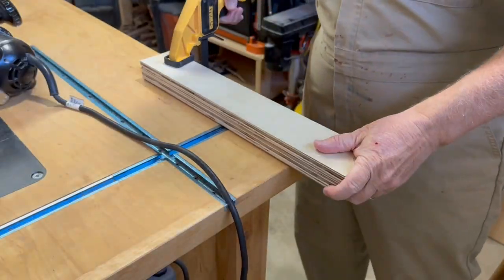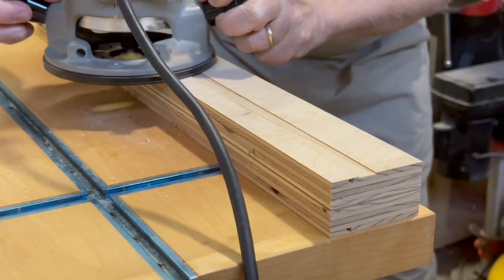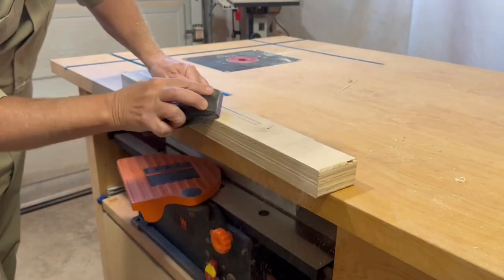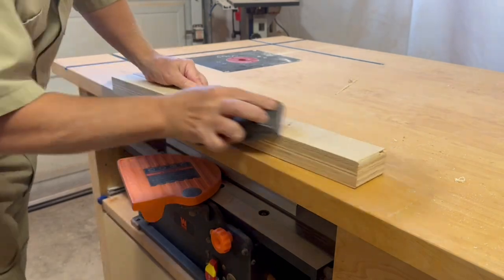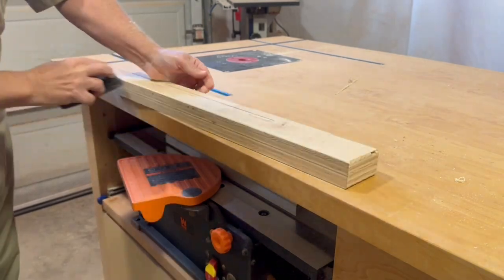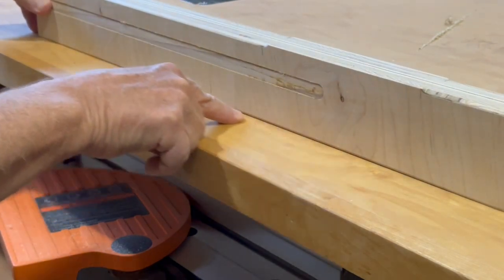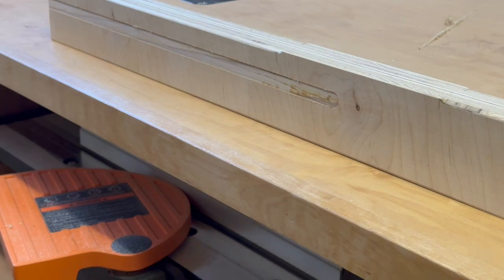I'm using a round-over bit on my handheld router just to add some ergonomics to the fences for easy handling of the sled. On the bottom inside edge of the front fence, I want a slight bevel to keep sawdust from getting in the way of a good fit with my workpiece. I could have cut this bevel on the table saw or the router, but honestly, just 30 seconds with a sanding block is way easier than a complete tool setup, and I get the result I'm looking for.